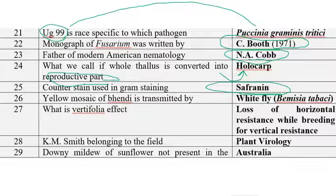K.M. Smith belongs to the field of plant virology. He is a plant virologist who introduced the use of indicator plants in plant virology. The next question: downy mildew of sunflower is absent in Australia. The disease can be seen in all other parts of the globe, but it is absent in Australia.